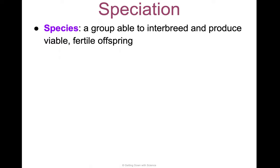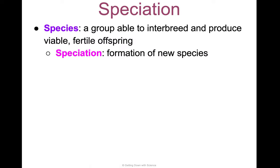A species is a group of individual organisms that are able to interbreed and produce viable, fertile offspring. This is on your vocab sheet. Speciation is the formation of new species — it results in the diversity of life forms.